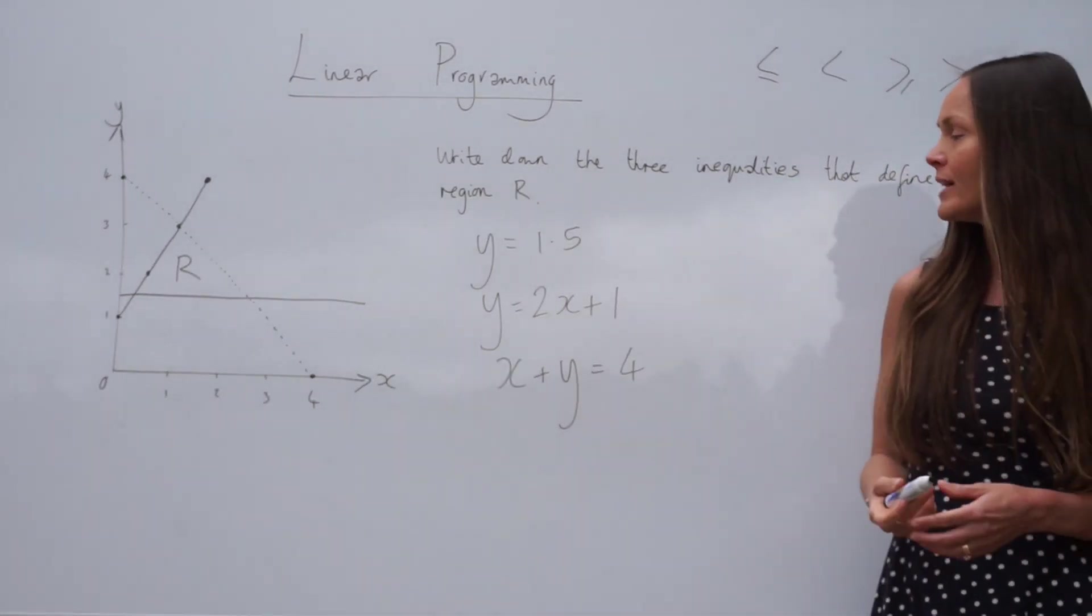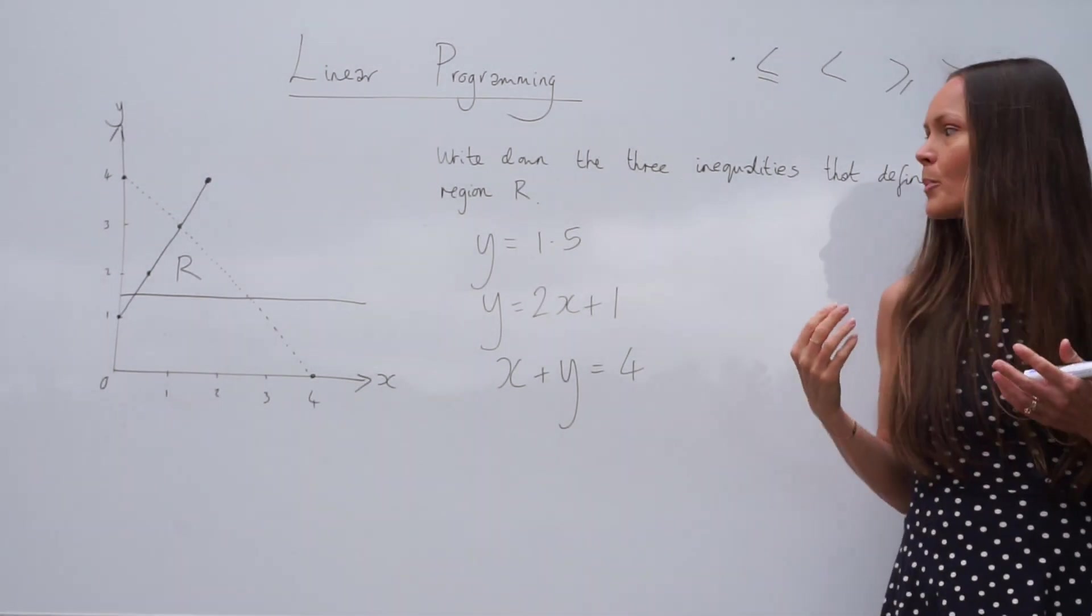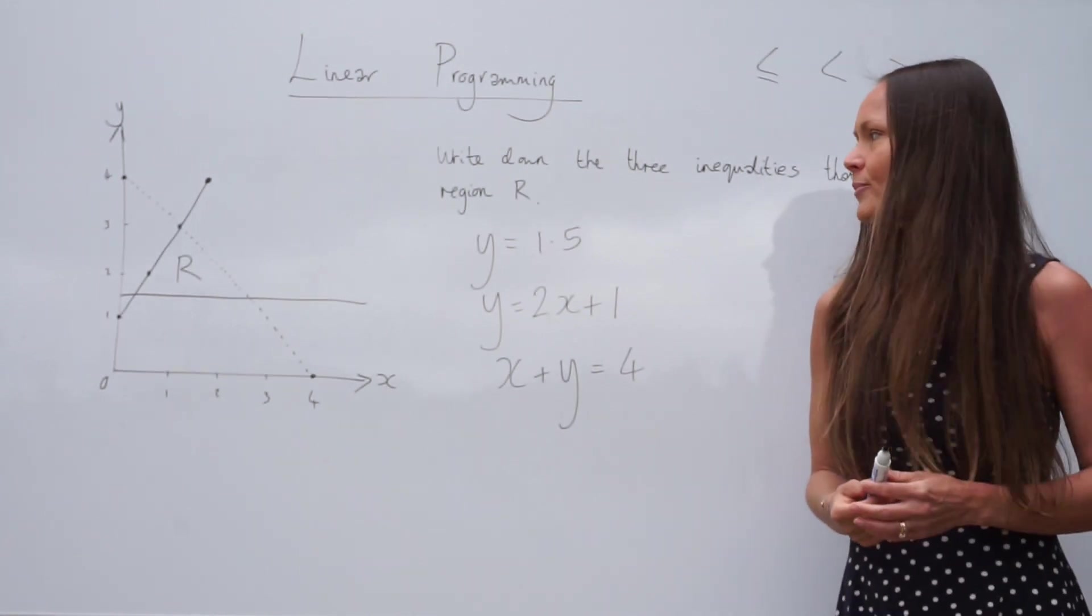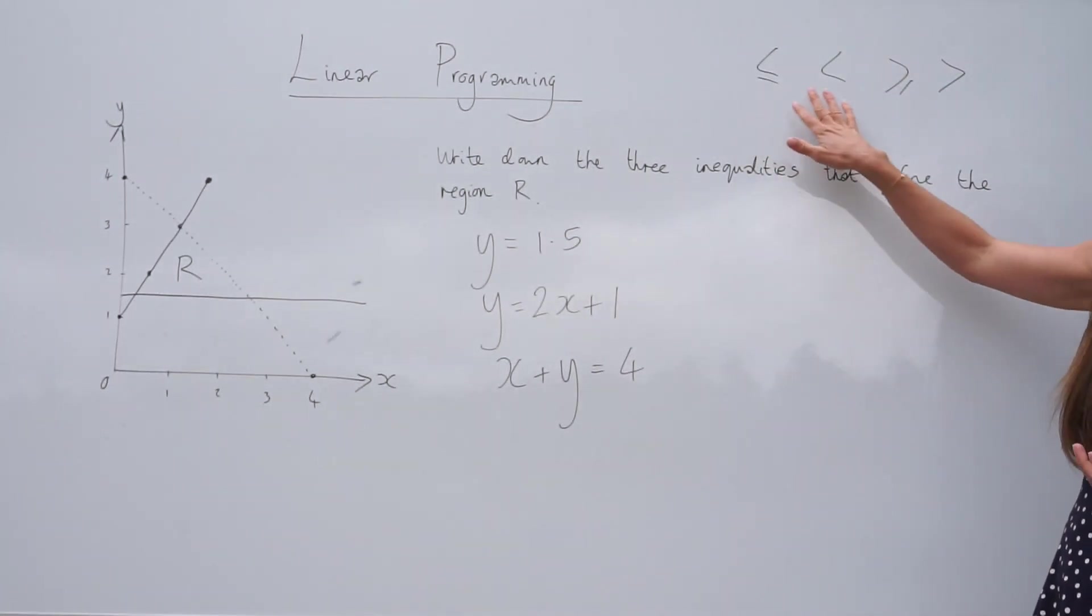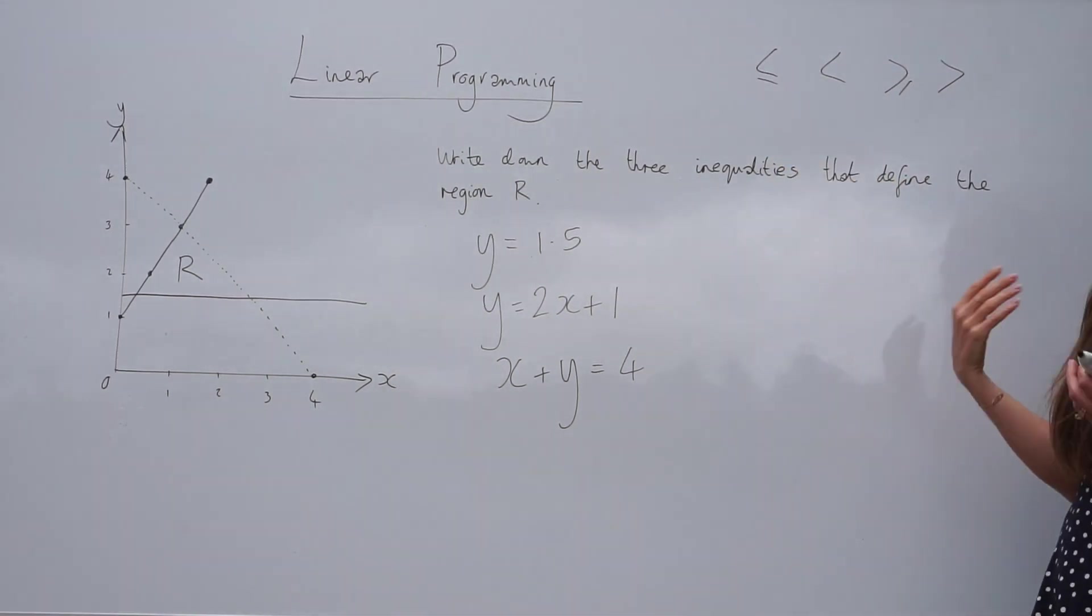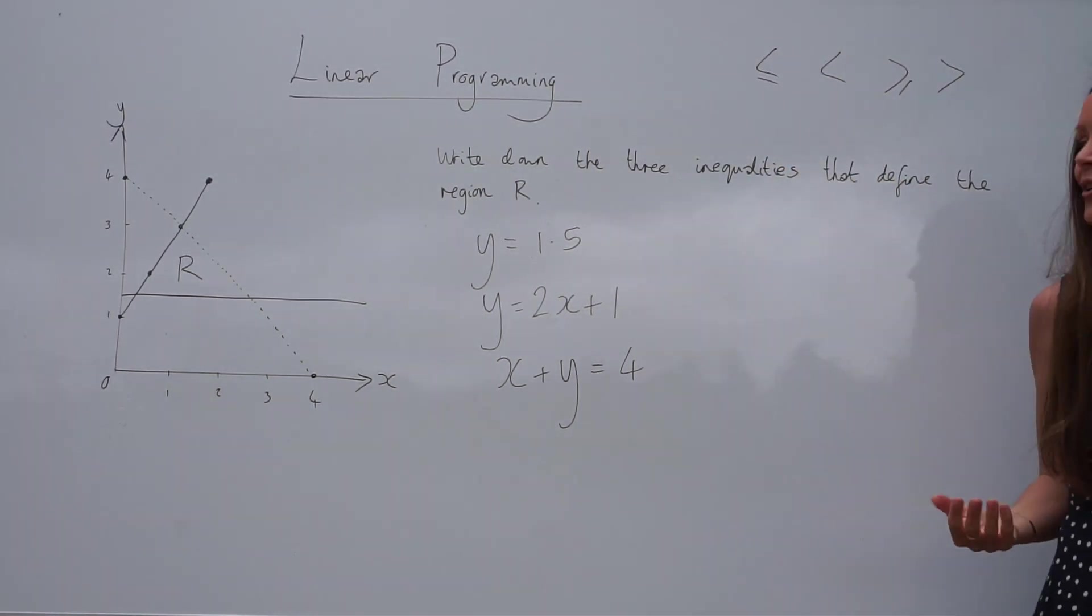So now we've got our three equations. We need to replace the equal signs with the correct inequality. And inequalities, they look like this. Could be greater than or equal to, greater than, less than or equal to, or less than.